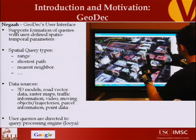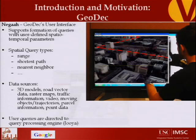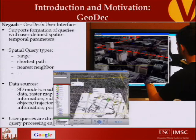We have different query interfaces. We're using cyber gloves — it's kind of Tom Cruise fashion to do this. We are supporting different special queries: range query, shortest path, the same driving direction that we have in Google Maps. This application is connected to different sources like 3D models, road vector data, traffic data, point data, and moving objects, which are the trams. Once we issue the query, the result comes back from our special query processing engine and is visualized here. At the same time, we can generate KML files and visualize the result in Google Earth.